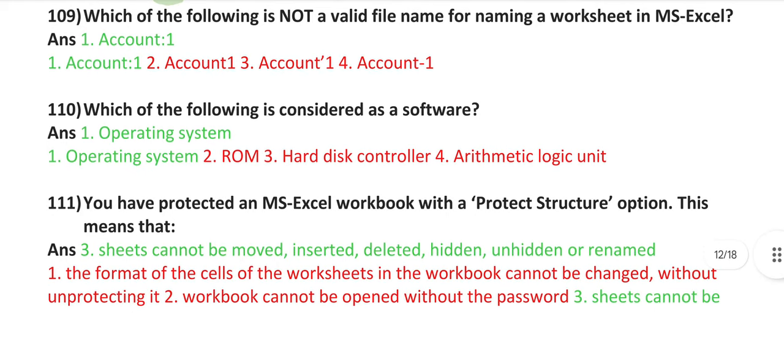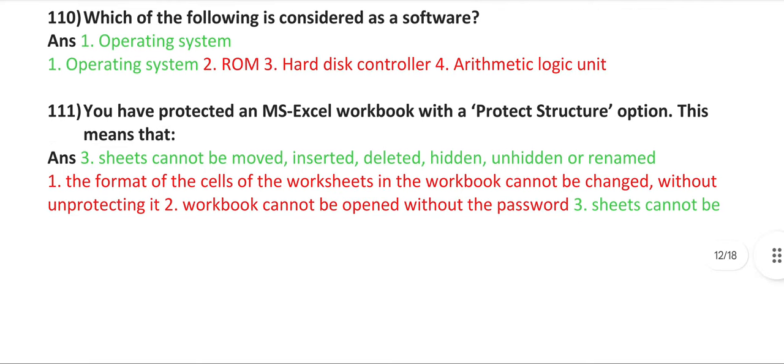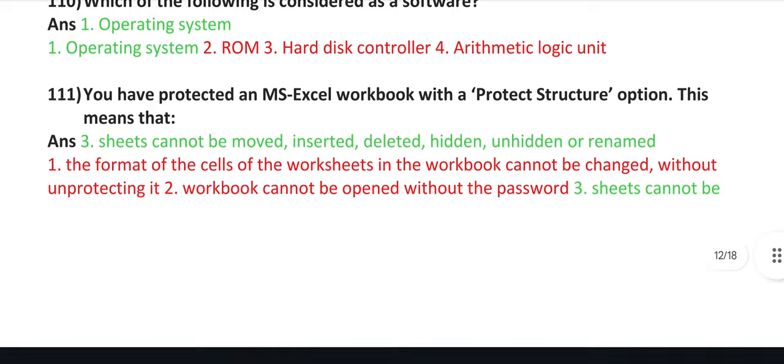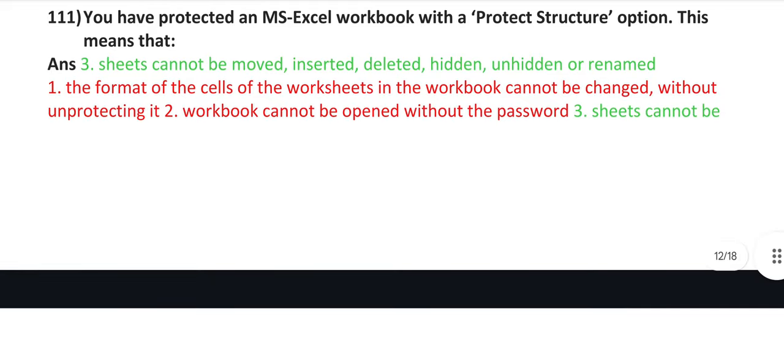Which of the following is not a valid file name for naming a worksheet in MS Excel? Account 1. Which of the following is considered as software? Operating system. You have protected an MS Excel workbook with a protect structure option. This means that sheets cannot be moved, inserted, deleted, hidden, unhidden, or renamed.